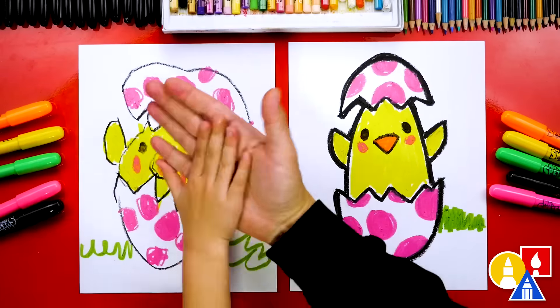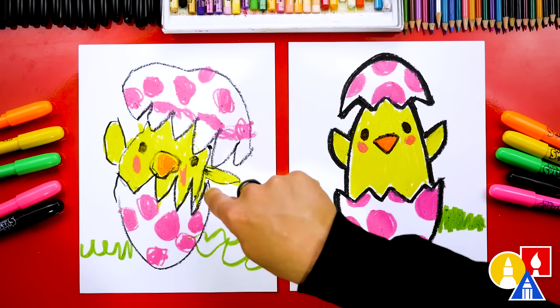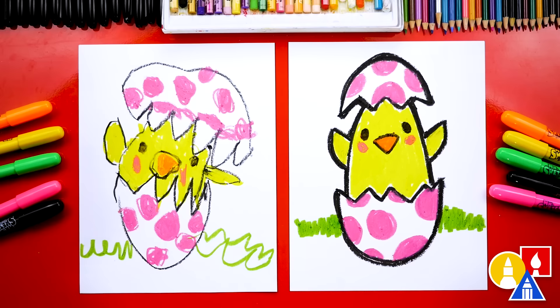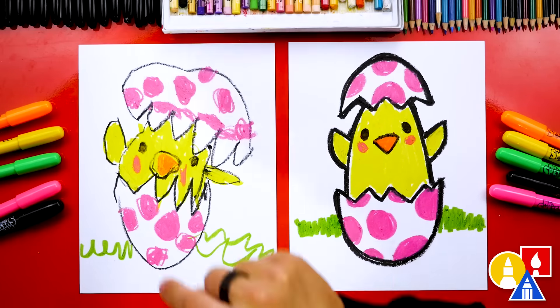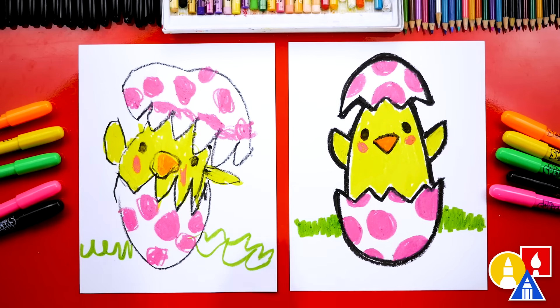Olivia, give me five. We did it. We finished drawing and coloring our baby chicken, our Easter baby chicken. I love coloring. Yes. I love coloring too. And I especially love the pink spots that you added to your egg. I like yours. Oh, thank you.